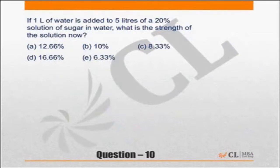A simple method of doing this: in a 5-liter solution with 20% sugar, that means there is 1 liter equivalent of sugar.